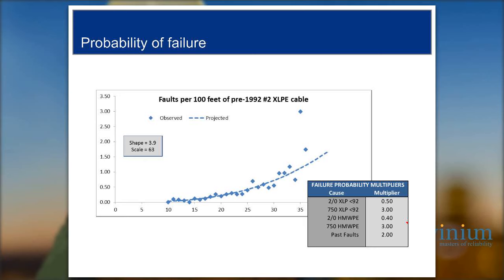Many utilities don't have this kind of data — their system isn't large enough or they haven't tracked it well enough to do a curve fit. They can try to share data with other utilities, find industry information, or — very commonly — rely on a combination of subject matter expertise and available data to calibrate a failure probability curve that projects the right total number of failures. A very detailed, rigorous database is not required to get started. You can almost always make do with whatever you have, even if all you have is the opinion of the subject matter experts at your utility.